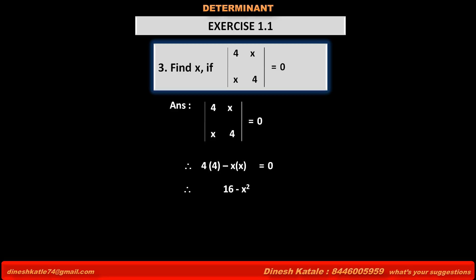Therefore, 4 times 4 is 16 minus X into X, X square, 16 minus X square, is equal to 0. Therefore, transposing 16 to the right hand side, we get minus X square is equal to minus 16.